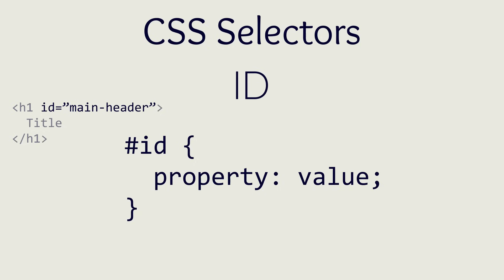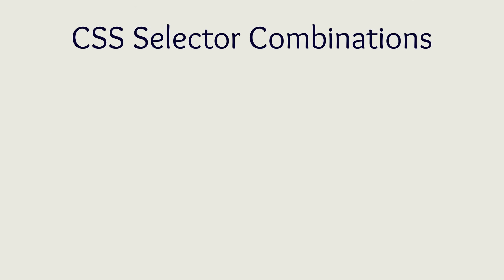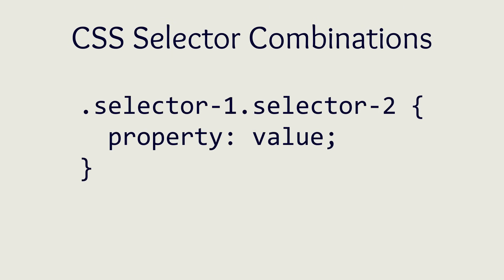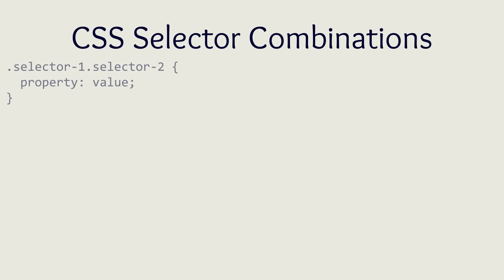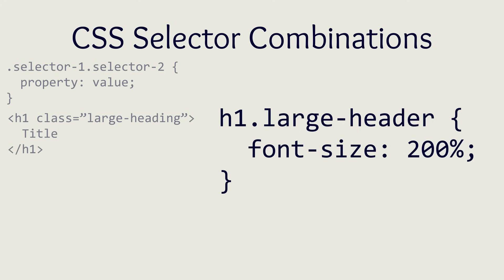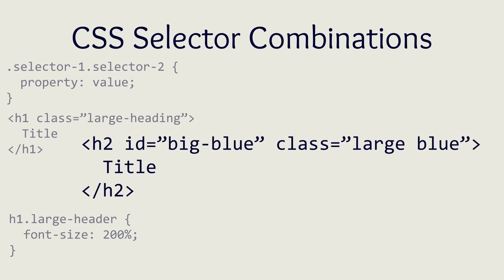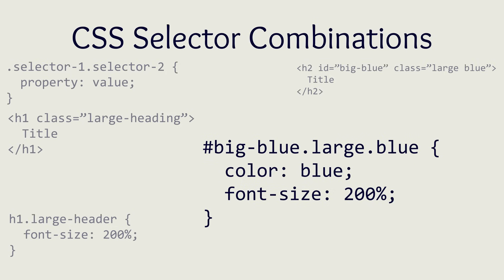On top of having many different selectors, CSS has multiple different ways to combine selectors together to make your selectors more specific. The first way is to specify multiple selectors that an element must have in order to be styled. To do this, you write the various selectors together with no spacing between them. For example, if you wanted to select all H1 elements with the class large-heading, you would write that selector. All HTML selectors can be combined this way as many times as you want to create specific or general rules.